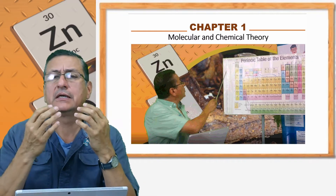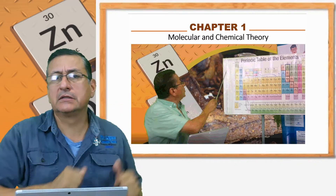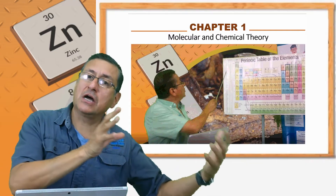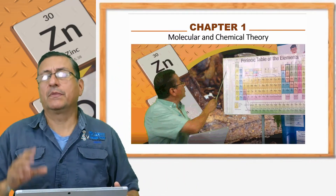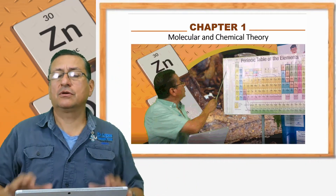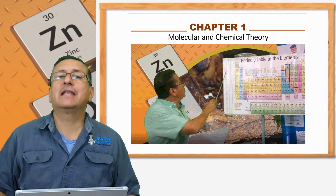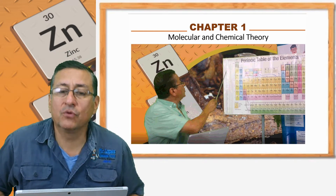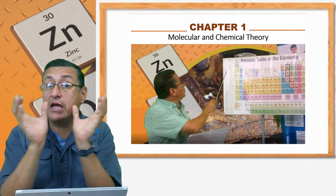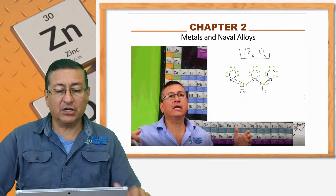We are going to analyze the difference between metals and non-metals, and between minerals and metals. We are going to study the process of oxidation. It's a long process but it's a nice course — a wonderful course. This is Chapter 1: we are going to study the molecular theory about the periodic table.